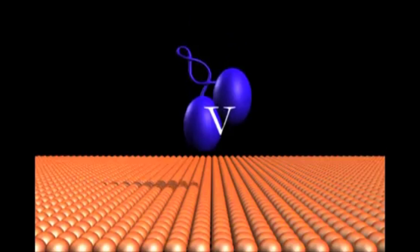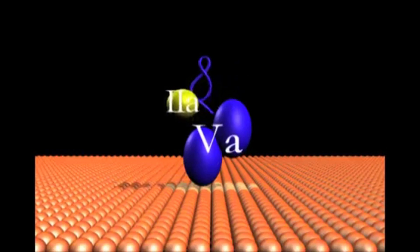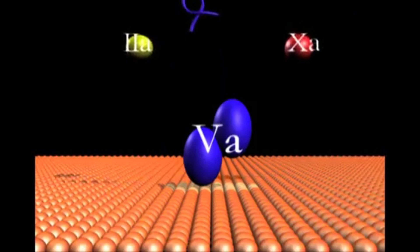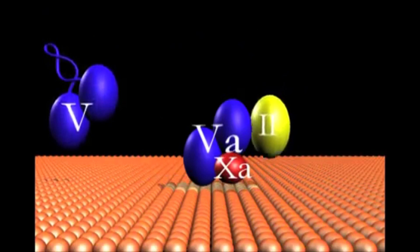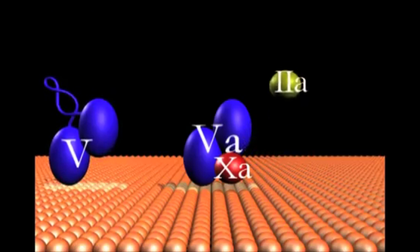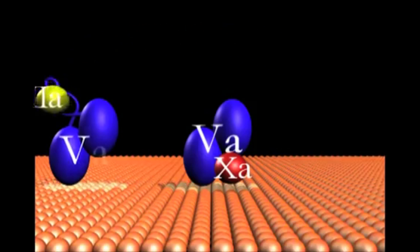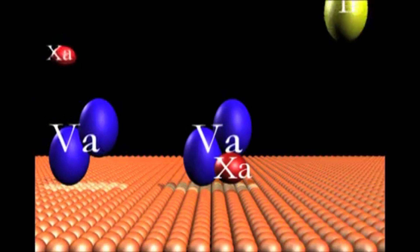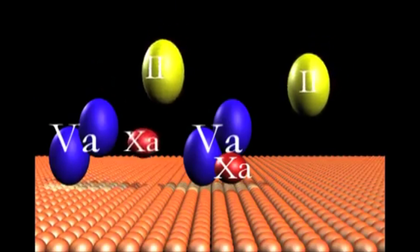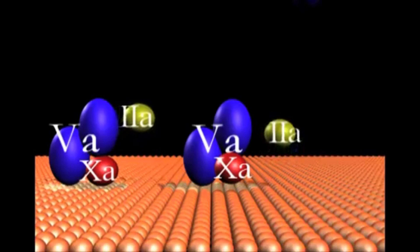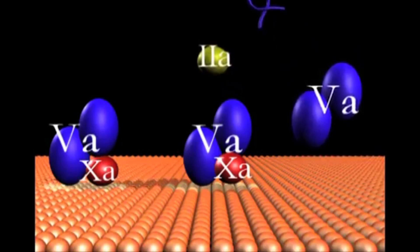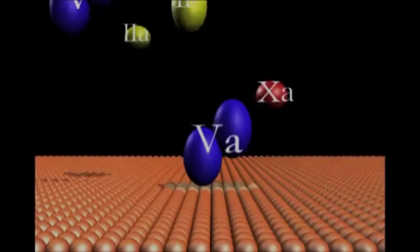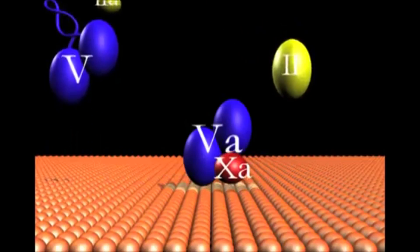Thrombin cleaves an internal activation peptide from factor 5. The factor 5a product bound to its platelet binding site serves as the receptor for factor 10a molecules initially provided by the tissue factor, factor 7a (TF7a) complex. The resulting prothrombinase complex (5a, 10a) accelerates by over 300,000-fold the generation of more thrombin, thus serving as a major amplification.